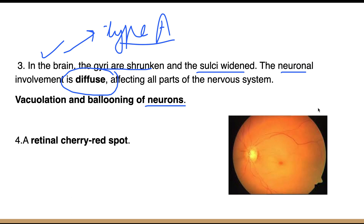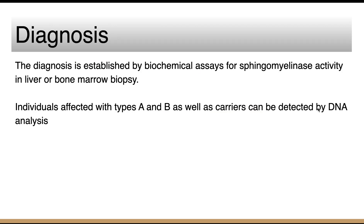In the eye, a cherry red spot can be seen on retinal examination. This finding can be seen in multiple diseases — for example, Tay-Sachs disease — and can also be seen in some patients with Niemann's Pick disease.